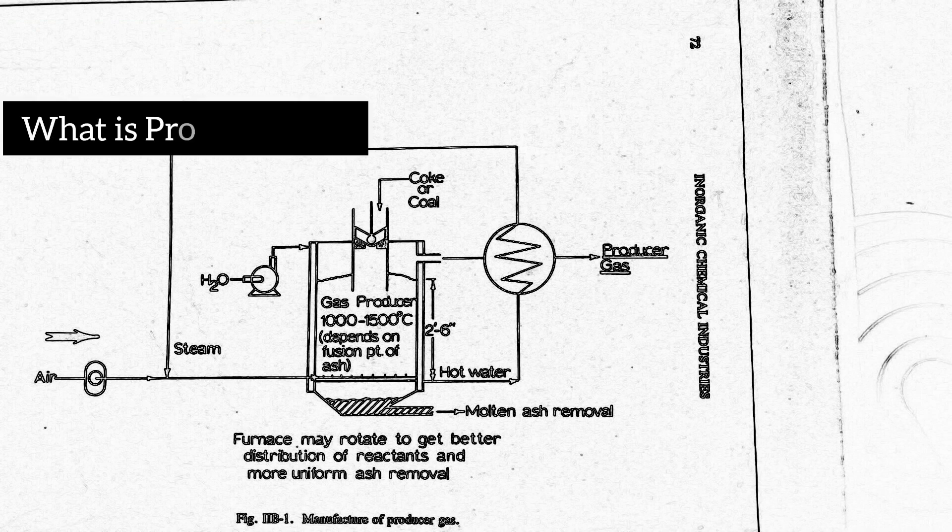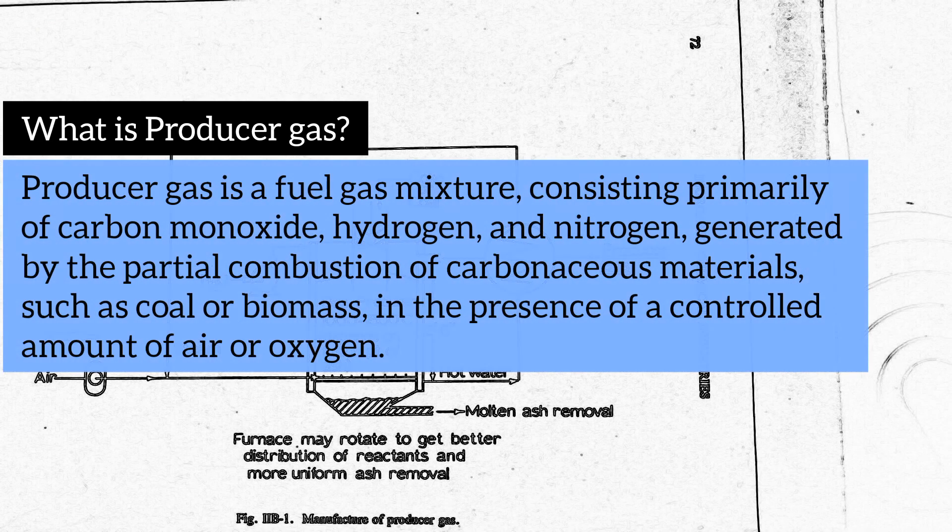First of all let us know what is producer gas. Producer gas is a fuel gas mixture consisting primarily of carbon monoxide, hydrogen, and nitrogen, generated by the partial combustion of carbonaceous materials such as coal or biomass in the presence of a controlled amount of air or oxygen.